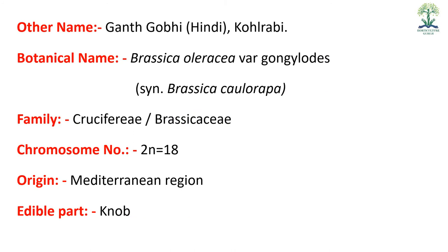Other name: Gant Gobi. Hindi में इसे Nolkhol को Gant Gobi भी कहते हैं, और कई जगहों पे इसे English में Kohlrabi भी लिखा हुआ रहता है। Botanical name: Brassica oleracea, Variety Gongylodes. Synonyms में कई किताबों में Brassica calorapa भी लिखा रहता है। Family: Cruciferae/Brassicaceae, Chromosome No. 2N=18, Origin: Mediterranean Region. Edible part: Knob होता है — एक तरीके से Tuber होता है, जो underground नहीं होता, यह जमीन से बाहर होता है।